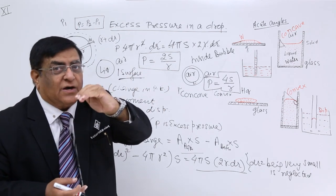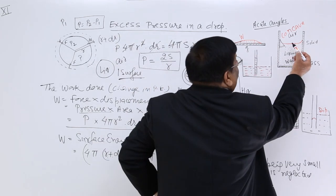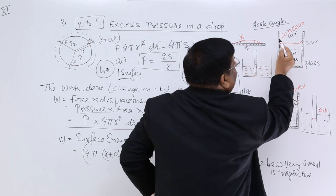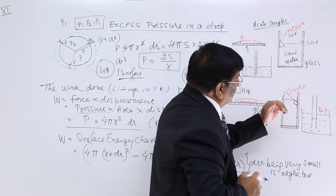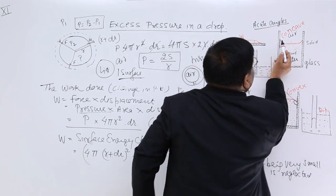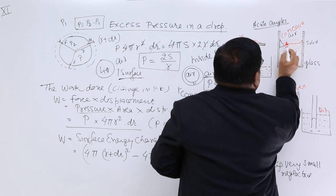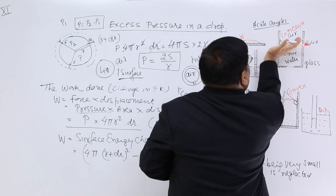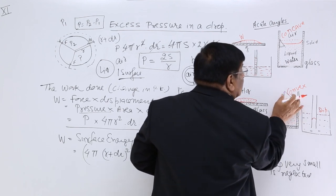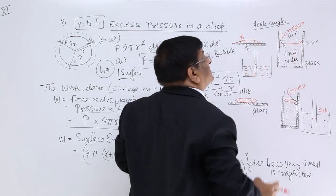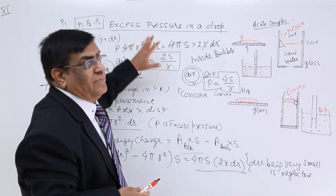Please remember: towards the concave surface, pressure is always large. The surface is always trying to shrink. After shrinking, the liquid tries to go up or come down depending on geometry, and that will be explained in the next lecture on capillarity. So this is about the excess pressure in a drop and in a bubble.